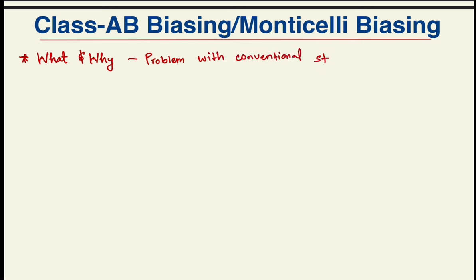Next, we'll intuitively come up with a brute force way to bias it depending upon the key requirements. Finally, we'll discuss what Monticelli had proposed way back in 1986.